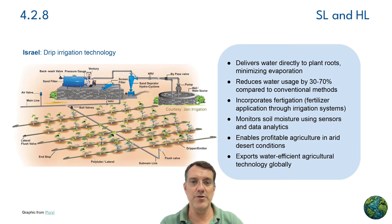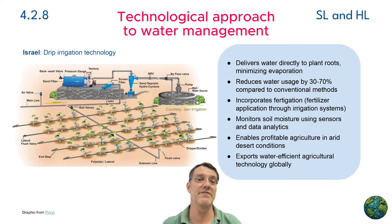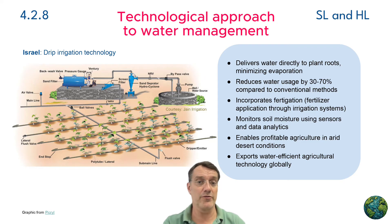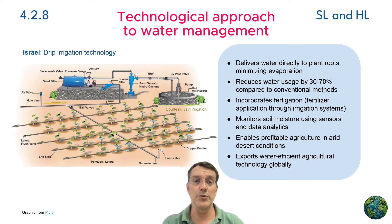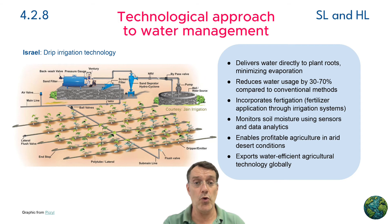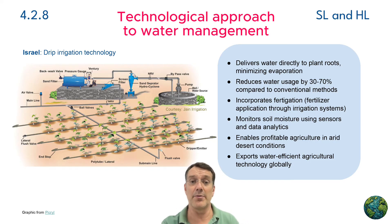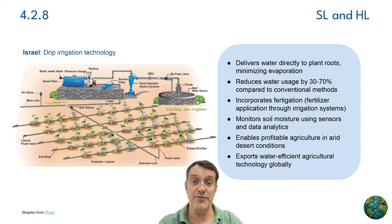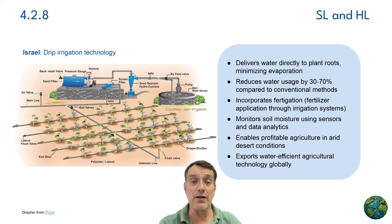Israel's pioneering drip irrigation technology exemplifies technological innovation to address water scarcity. This system delivers water directly to plant roots through perforated pipes, minimizing losses through evaporation. The technology reduces overall water usage by up to 70 percent compared to conventional methods, incorporates fertilizer delivery for efficient nutrient application, and employs sophisticated sensors and data analytics for optimization. Israel has transformed desert regions into productive agricultural land through this approach, while becoming a global exporter of water-efficient agricultural technology.